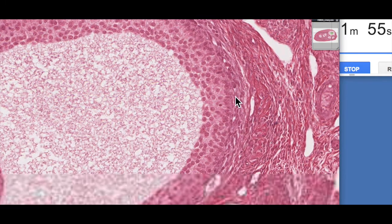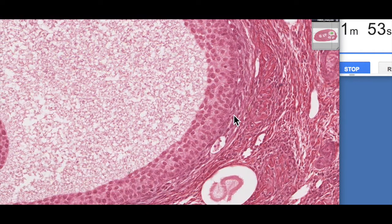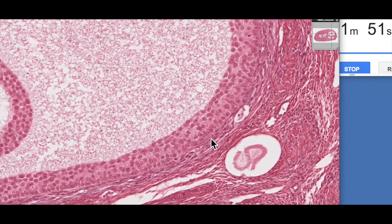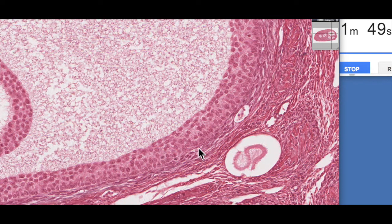This layer here directly on the outside of the basement membrane is the theca interna. The theca interna is responsible for producing an androgen. It has receptors for luteinizing hormone, binds luteinizing hormone, causes it to produce an androgen. That androgen then crosses the basement membrane and is picked up by the granulosa cells in the presence of FSH, which then converts that androgen into an estrogen through the enzyme aromatase.